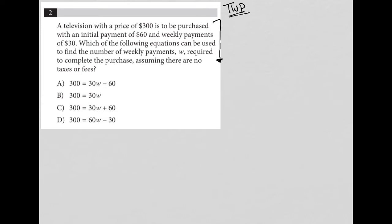So the first sentence here says a television with a price of $300 is to be purchased with an initial payment of $60 and weekly payments of $30. Okay, so TV, it costs $300.